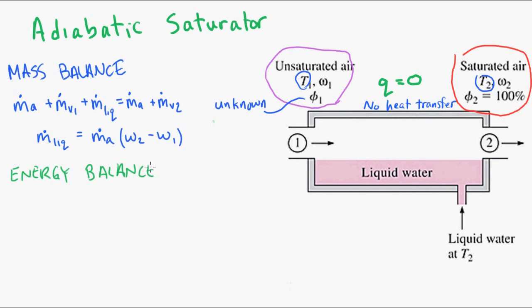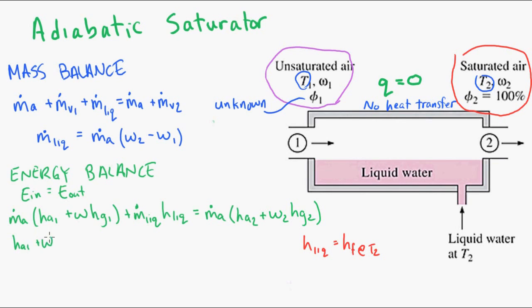If we do an energy balance on the system, we're now using the energy in is equal to the energy going out, and we're using the enthalpy of the mixture as we defined a few seconds ago. So the mixture going in plus the water going in is equal to the energy of the mixture going out. Now, as an aside, we know that the enthalpy of the liquid is equal to HF at temperature 2, or the outlet temperature. So we'll substitute that in. We'll also substitute in the above expression for the mass flow rate of the liquid.